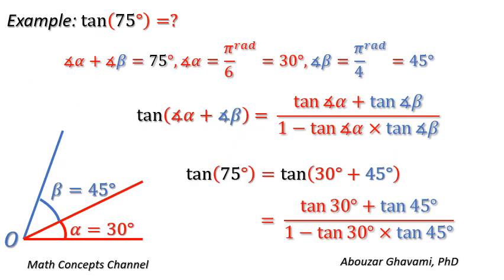As an example, let us calculate tangent of 75 degrees. 75 degrees equals 30 degrees plus 45 degrees. Tangent of 75 degrees equals tangent of 30 degrees plus 45 degrees.